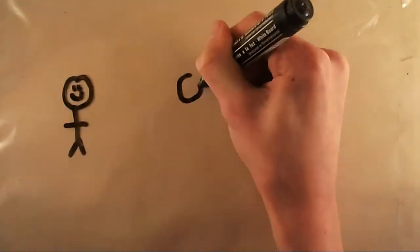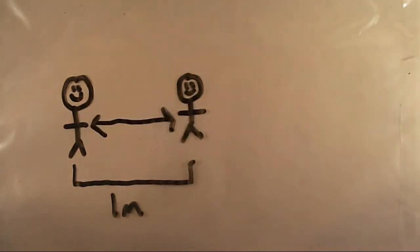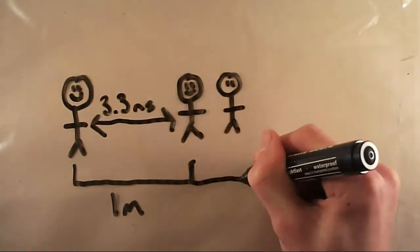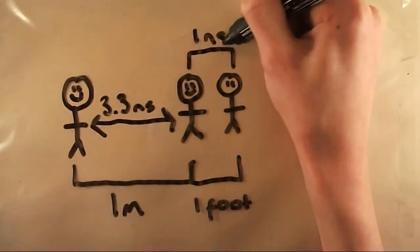So what if you were watching someone near you? Are you looking at them in the past too? Well, you are slightly. If you were looking at someone who's a meter away from you, light is taking 3.3 nanoseconds to reach you from them, and if you're a foot away, it's 1 nanosecond.